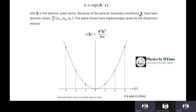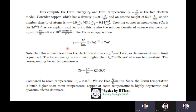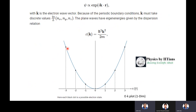The periodic boundary condition gives k discrete values: (2π/L)(nx, ny, nz). The plane waves have energy eigenvalues given by the dispersion relation: ε(k) = ℏ²k²/2m. Plotting this E-k diagram in one dimension gives a parabola. Each black dot represents a possible electronic state, since k is discrete and cannot be continuous.